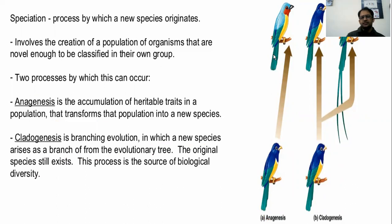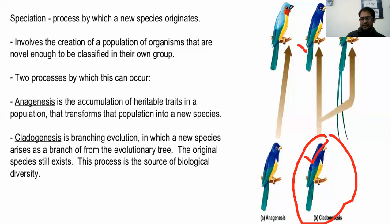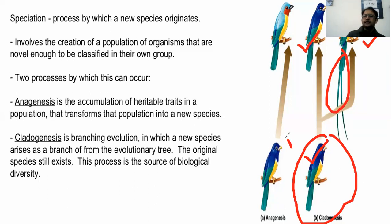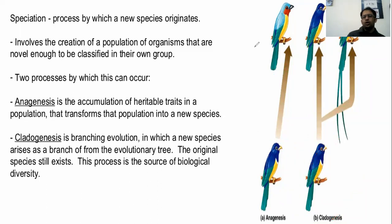In cladogenesis, the original species still exists, but due to modification you can see different traits — such as different tail shapes and color patterns — and a new species also develops. In anagenesis, an old species is modified into a new species and the original no longer exists.